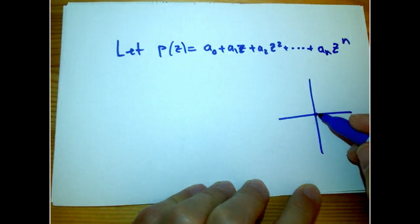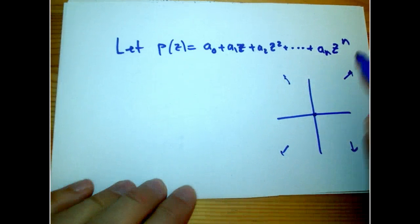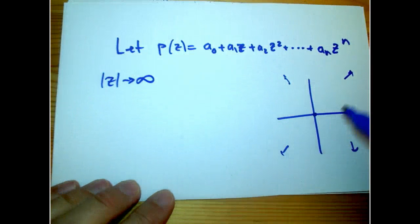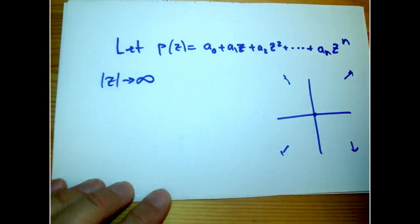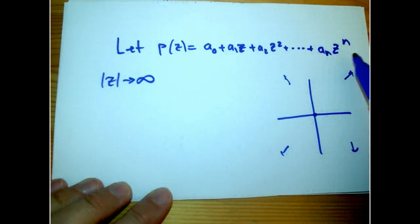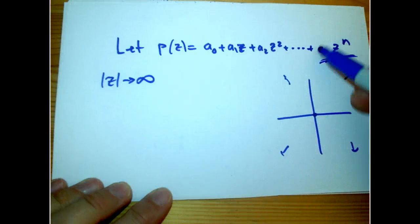It's going to have some value there at the origin. And then what happens if we go way, way far out? If the magnitude of Z goes to infinity, no matter what direction we're going in, the leading term is going to dominate. That's going to be the dominant term, and that's going to go to magnitude infinity as well.